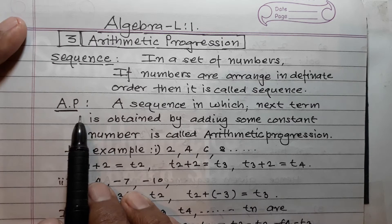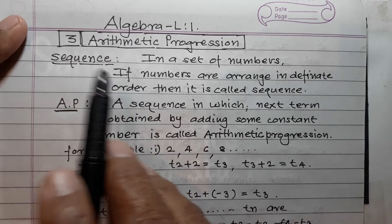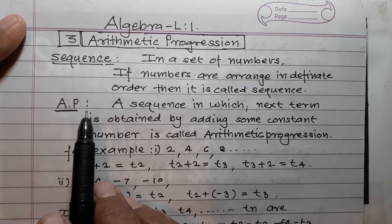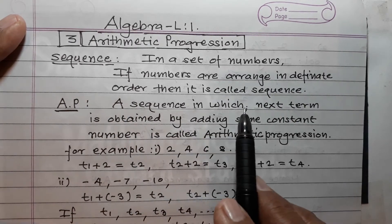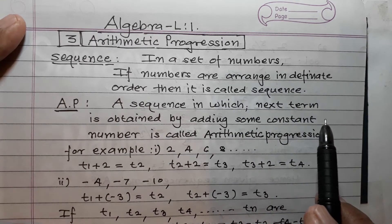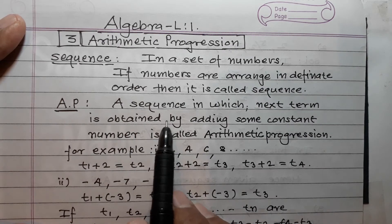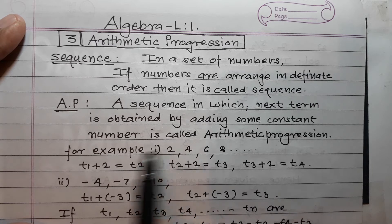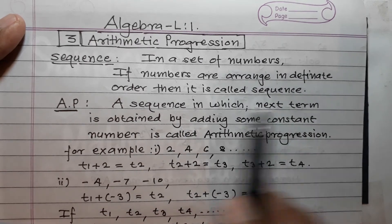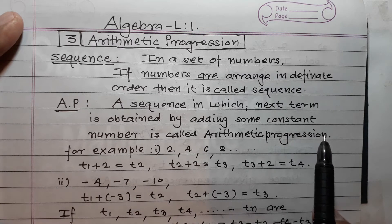Now try to understand what is AP. AP is a sequence. In a sequence, the next term is obtained by adding some constant number to the preceding term. A sequence in which the next term is obtained by adding some constant number is called an Arithmetic Progression.